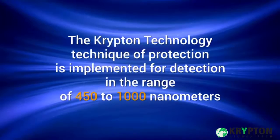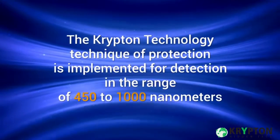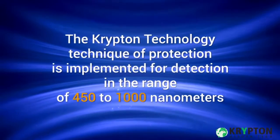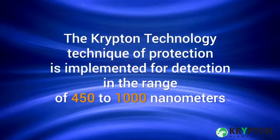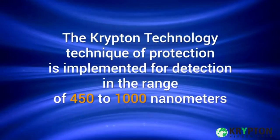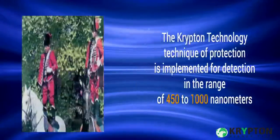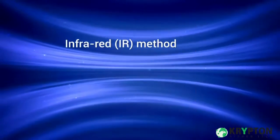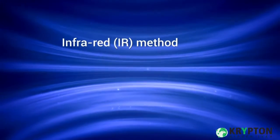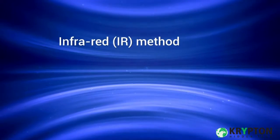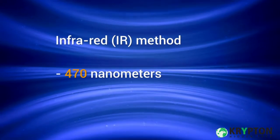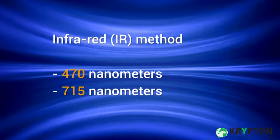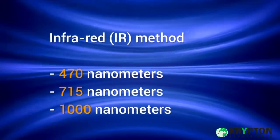The Krypton technology technique of protection is implemented for detection in a range of 450 to 1000 nanometers. This figure shows an example where the image of an old town is concealed in a printed image of horsemen using the infrared IR method, with three filters of 570, 715, and 1000 nanometers.